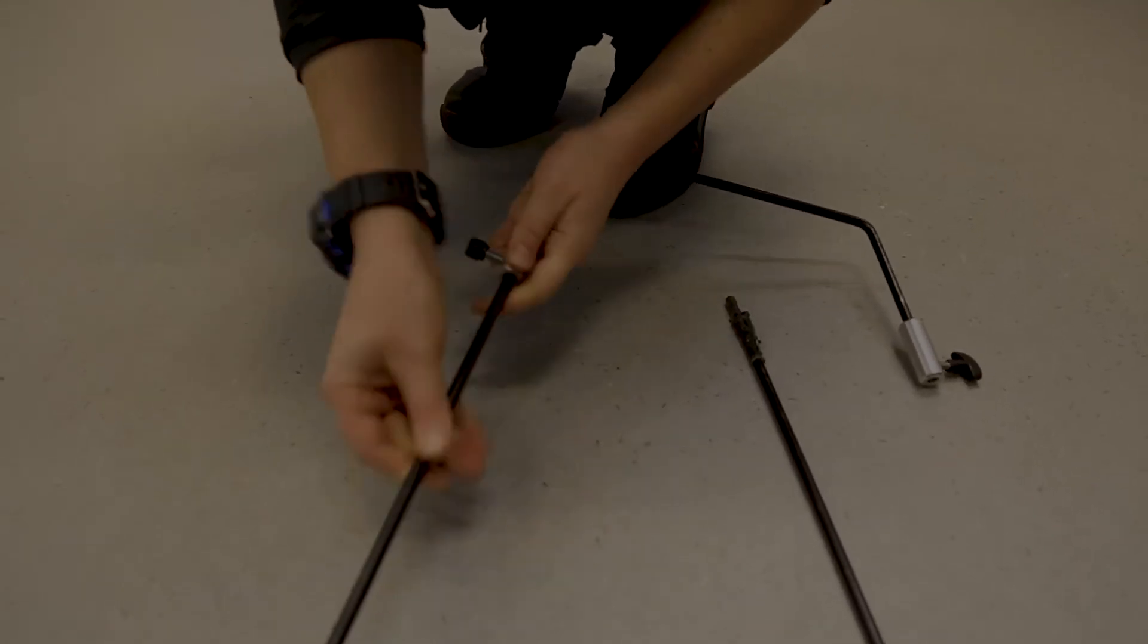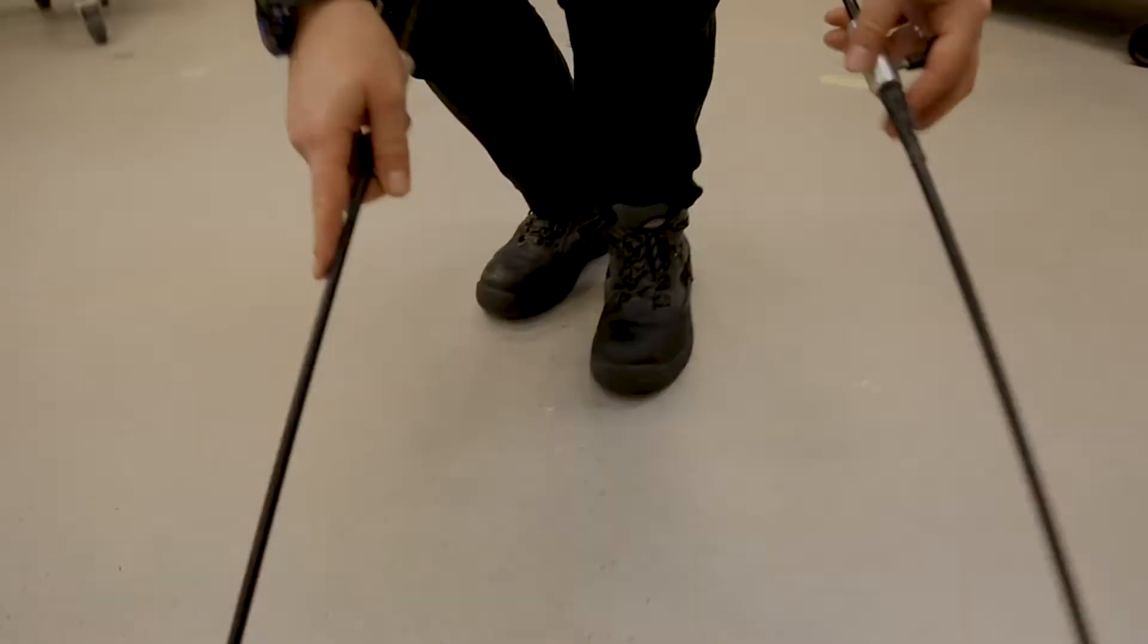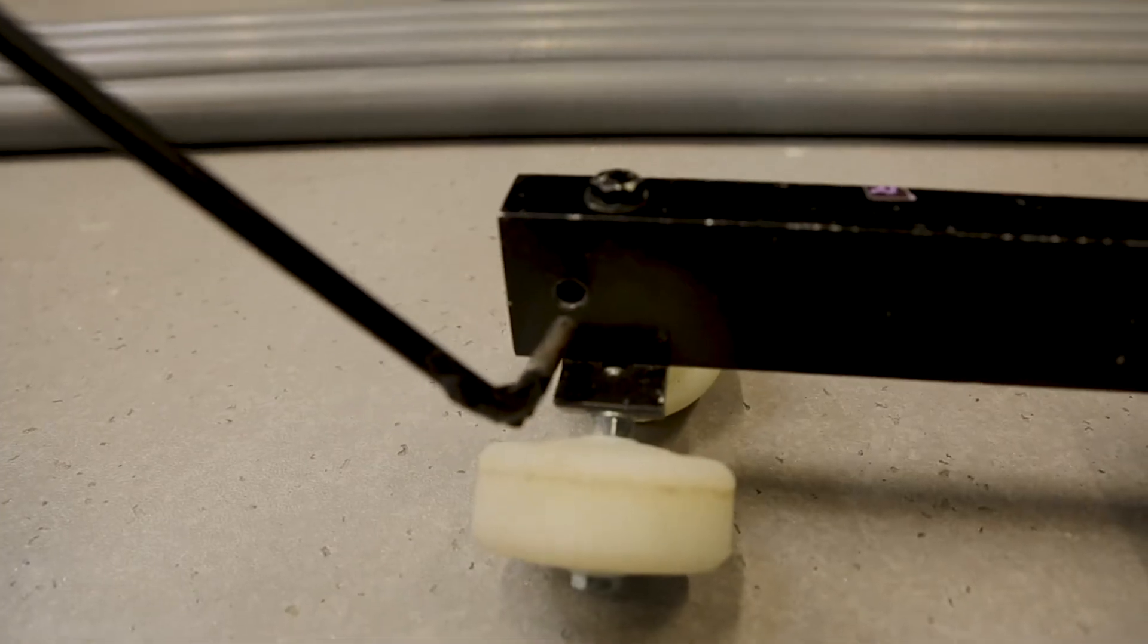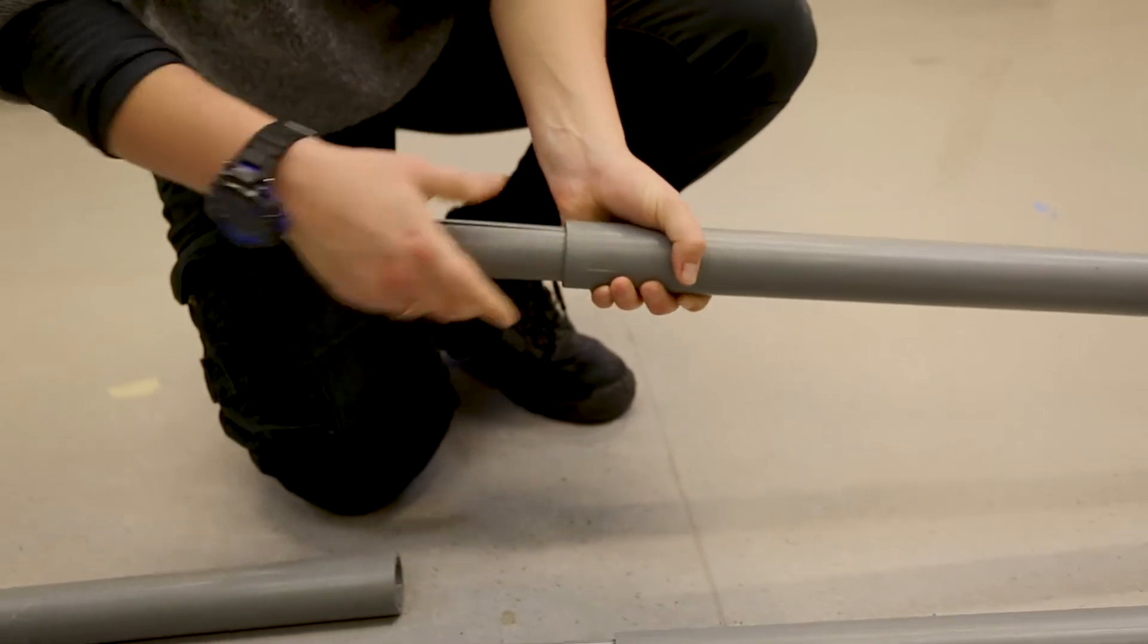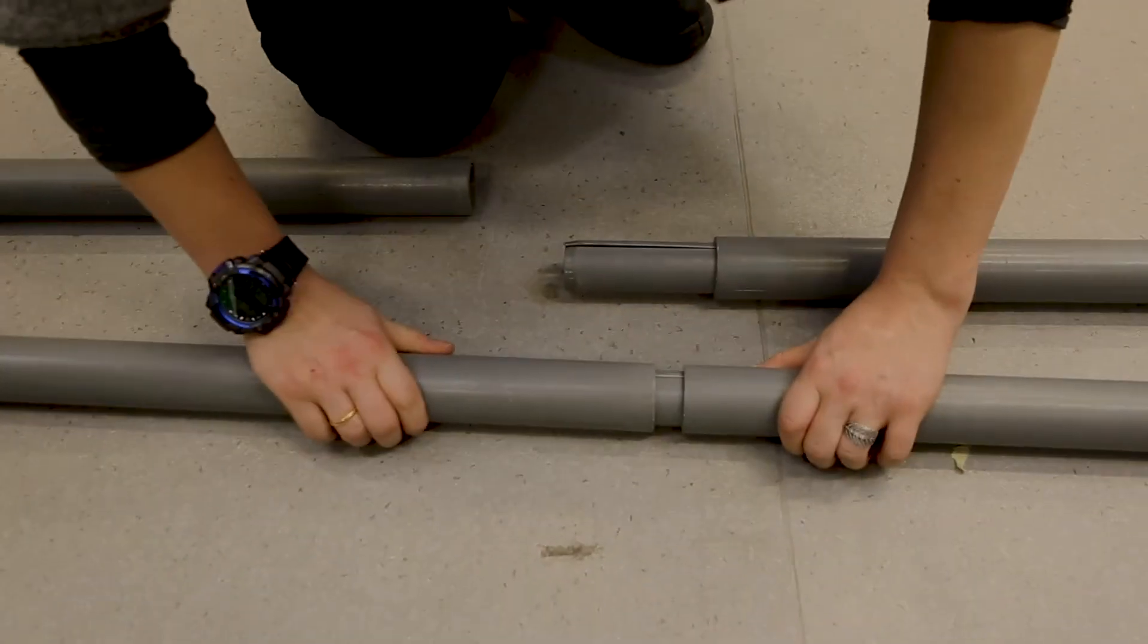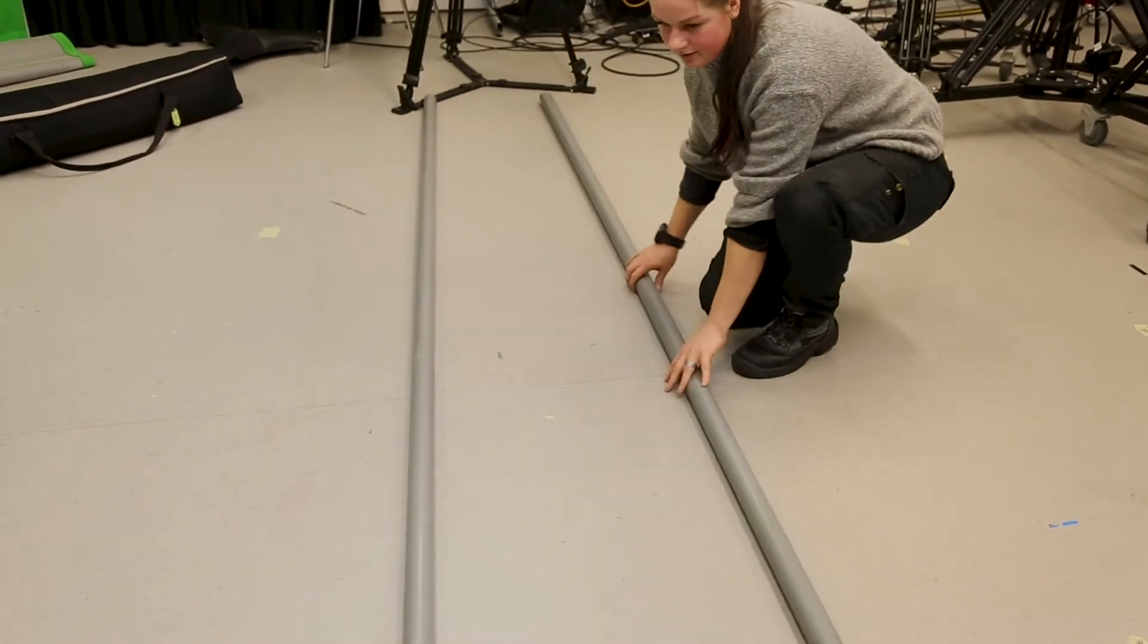Next screw in the handles and insert into the tracking base frame. The pipe connectors need to be halfway in before attaching the other pipes. Check the connectors are still there when packing away.